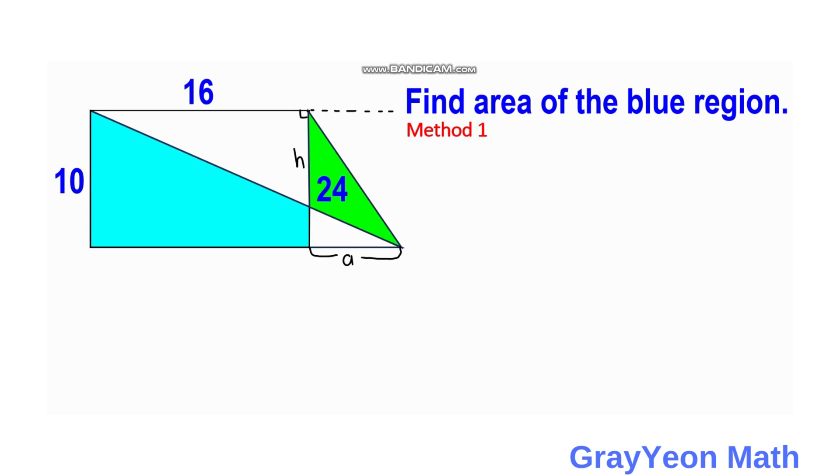Next, we draw a line from this point of the rectangle outwards and downwards to this point of the green triangle. So next, we label this length as H, and we label this side as A.